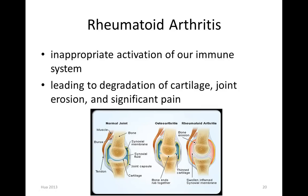This is part two of anti-inflammatory drugs and we'll talk about rheumatoid arthritis. Due to inappropriate activation of our immune system that results in inflammation leading to immune-mediated diseases, in this case rheumatoid arthritis, an autoimmune disease. The final outcome includes degradation of collagen, joint bone erosion, significant pain, and reduction in quality of life.